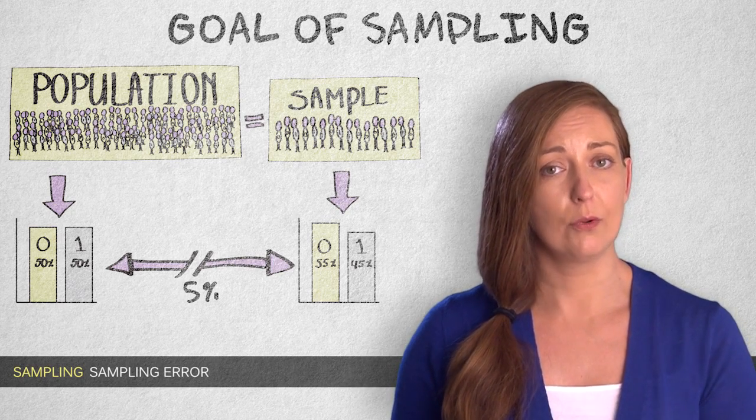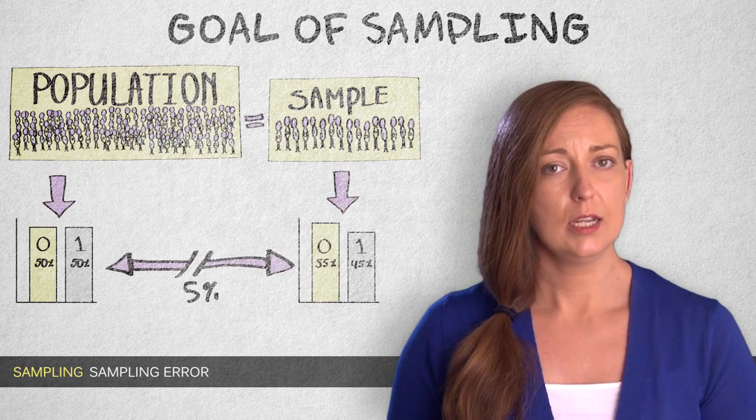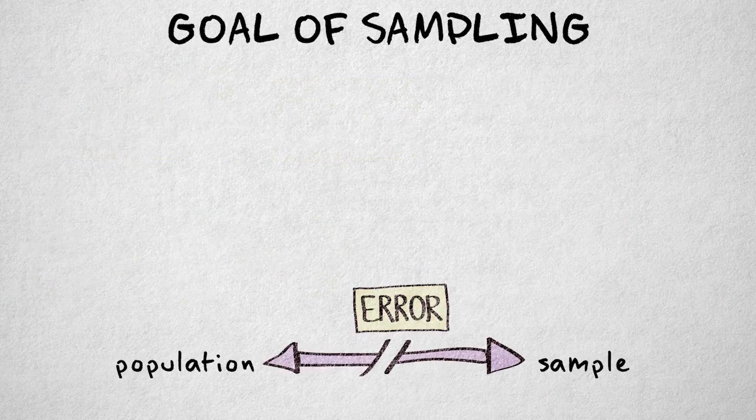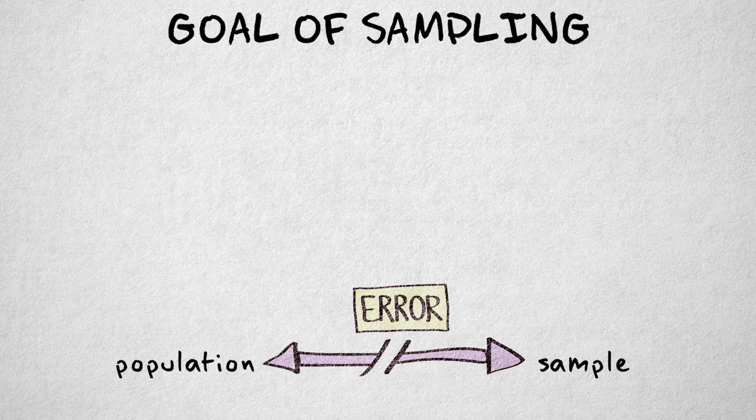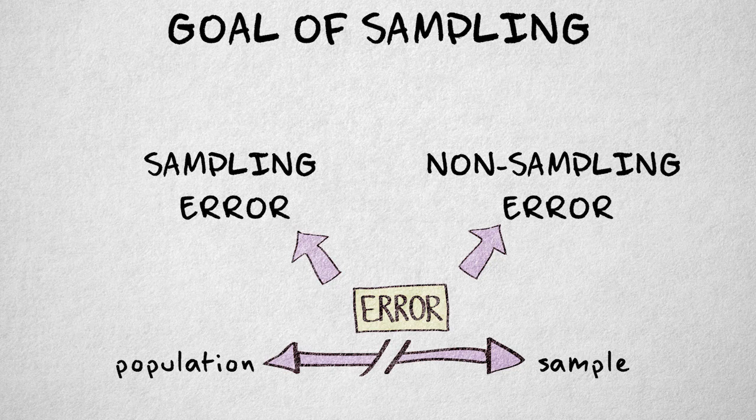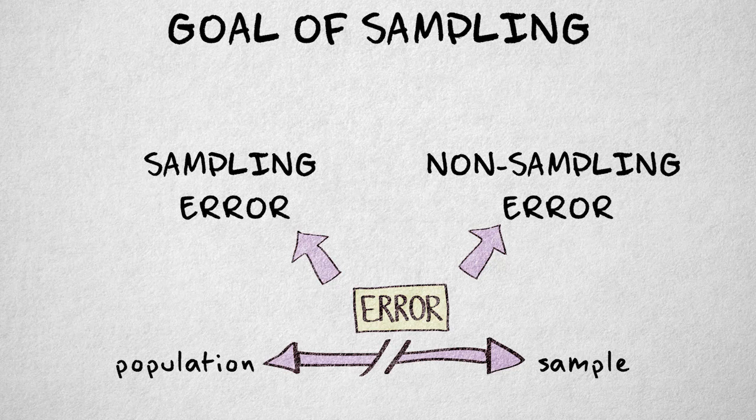The difference between sample and population value is generally referred to as error. This error can be categorized into two general types, sampling error and non-sampling error. In this video, I'll only discuss the first type, sampling error.